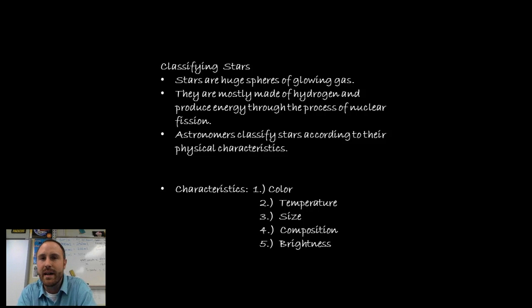Stars are basically classified by five things: color, temperature, size, composition, and brightness. A star is basically a huge sphere of glowing gas and they're mostly made up of hydrogen gas. They produce energy through a process known as nuclear fission. Understand that stars are made up of hydrogen gas and astronomers have put these characteristics together to help identify and classify them.